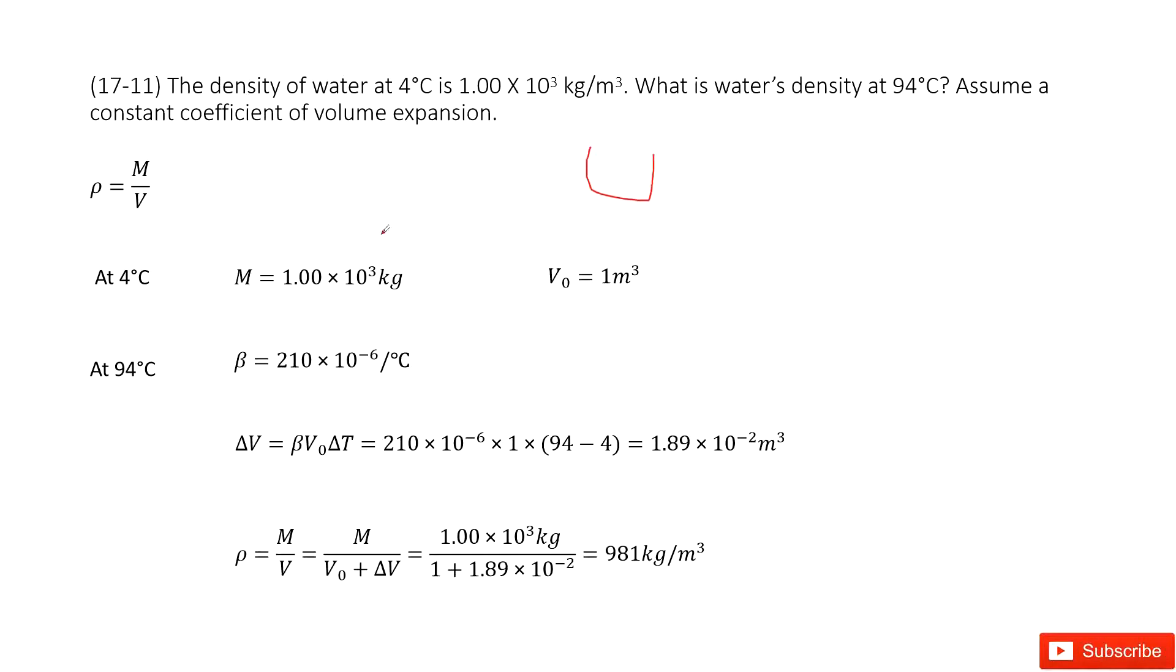So now we can consider at 4 degrees the mass is just 1,000 kg and volume is 1 m³. That works. That makes the density just equal to this one. So we assume the mass and the initial volume.